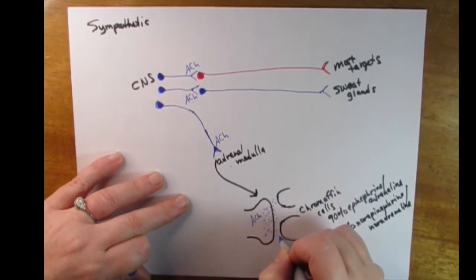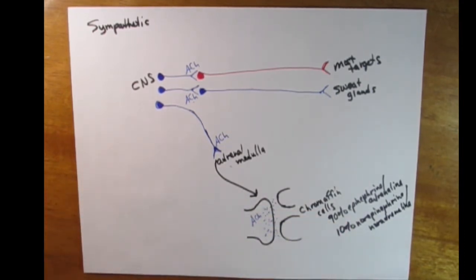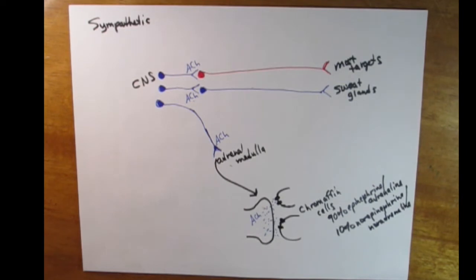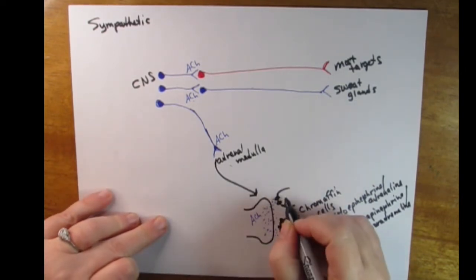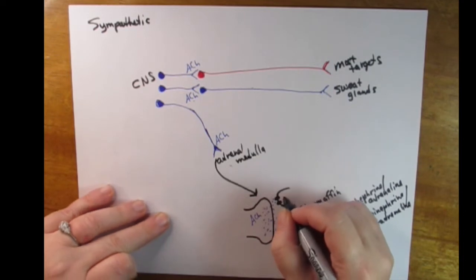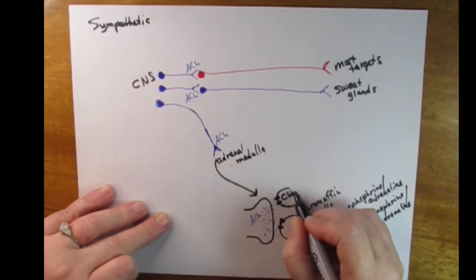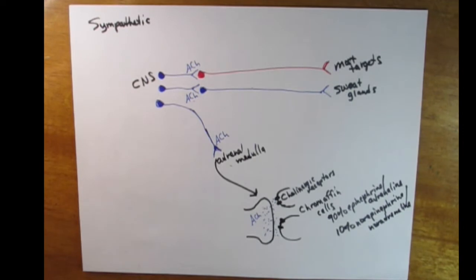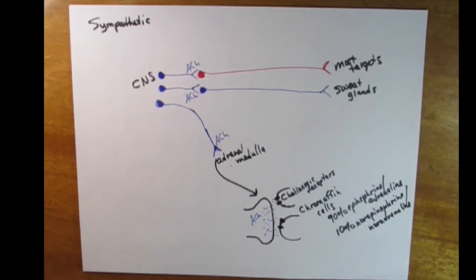Our cholinergic cell releases acetylcholine, which will interact with receptors on these chromaffin cells. Are the receptors adrenergic or cholinergic? They are, in fact, cholinergic receptors. Receptors are named for the neurotransmitter they receive — in this case, they receive acetylcholine, therefore they are cholinergic receptors. The big picture is that the predominant chemical released by the adrenal medulla is epinephrine, with some norepinephrine as well.